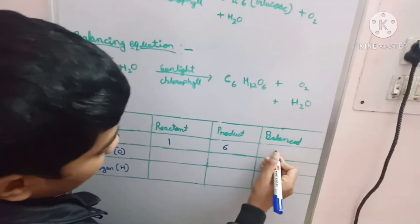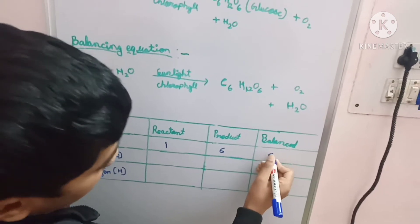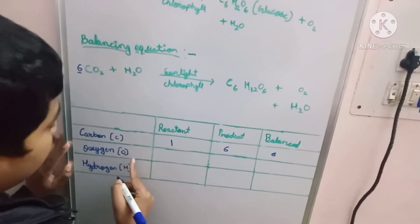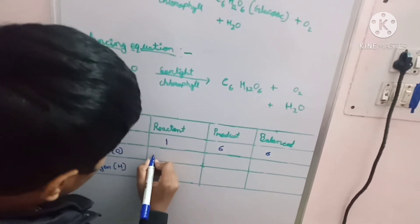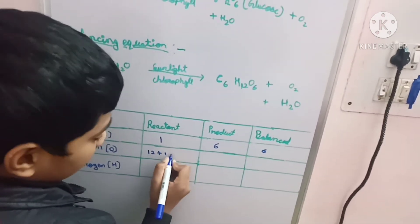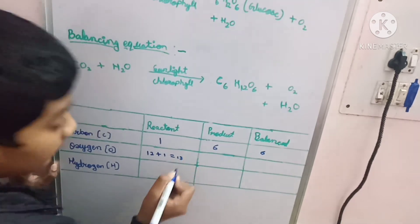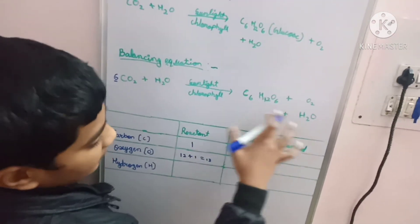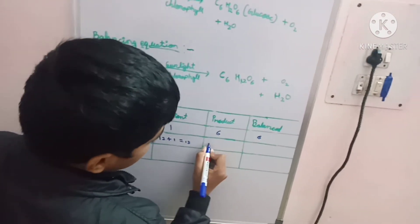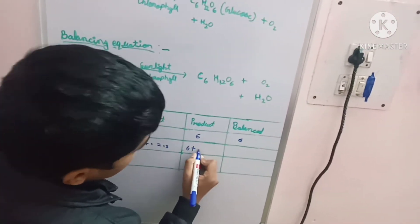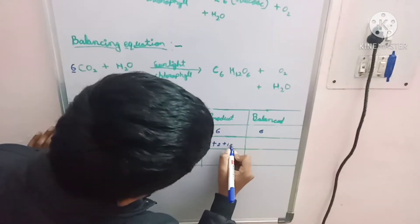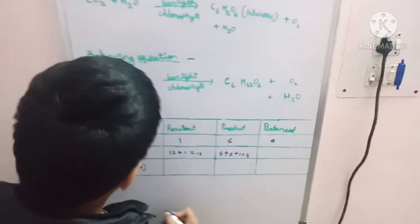Now we will see how many oxygens are there on the reactant side — there are 13 oxygens, meaning 12 plus 1 equals 13. On the product side, 6 plus 2 plus 1 equals 9 oxygens.